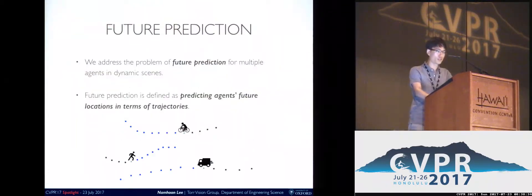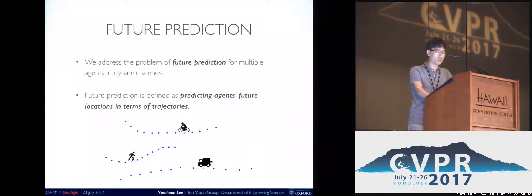In this work, we address the problem of future prediction of multiple agents in dynamic scenes. We define future prediction tasks as predicting agents' future locations in terms of trajectories, as seen in the figure below. In complex situations where multiple agents are interacting with each other, our system aims to predict future locations for these agents. The past trajectory and the future estimate are represented by the dotted black and dotted blue lines, respectively.